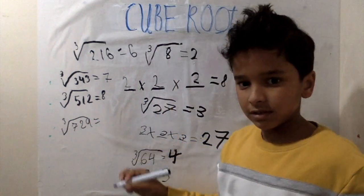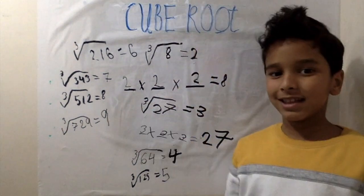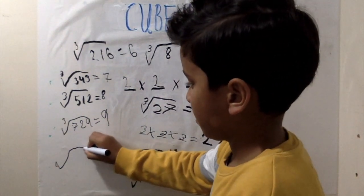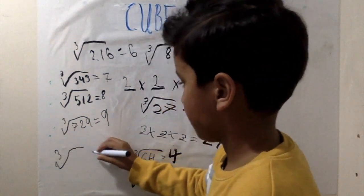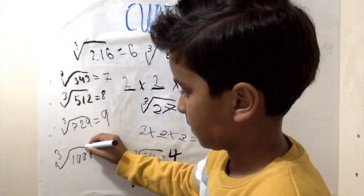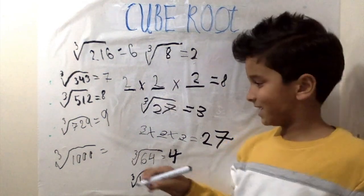Cube root of 729 equals 9. And lastly, the cube root of a thousand equals 10.